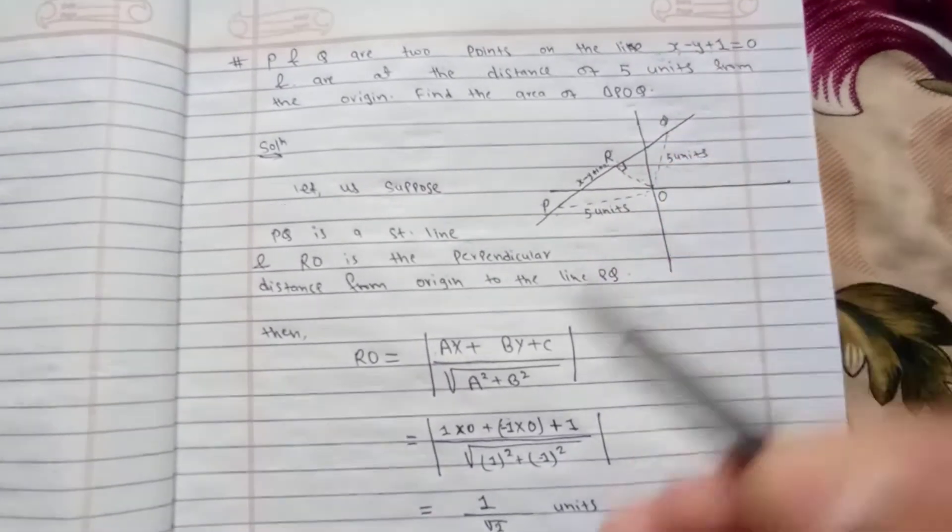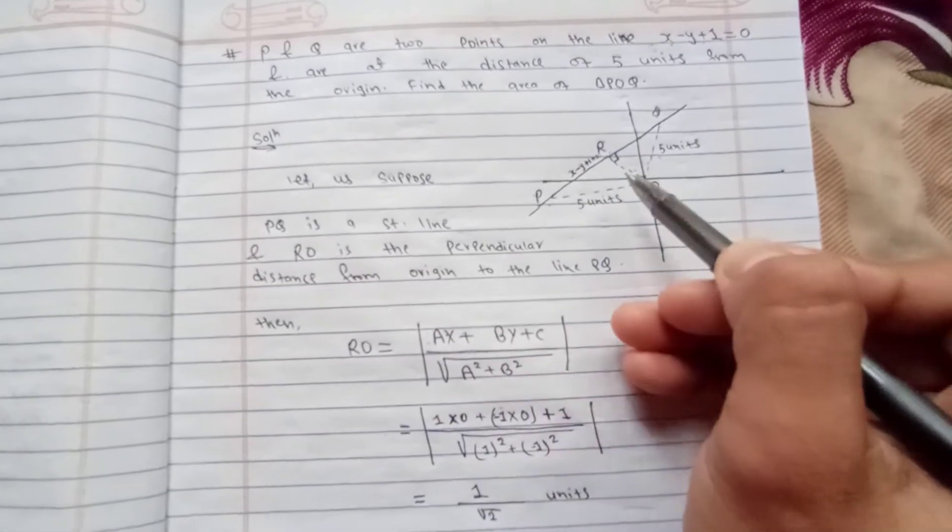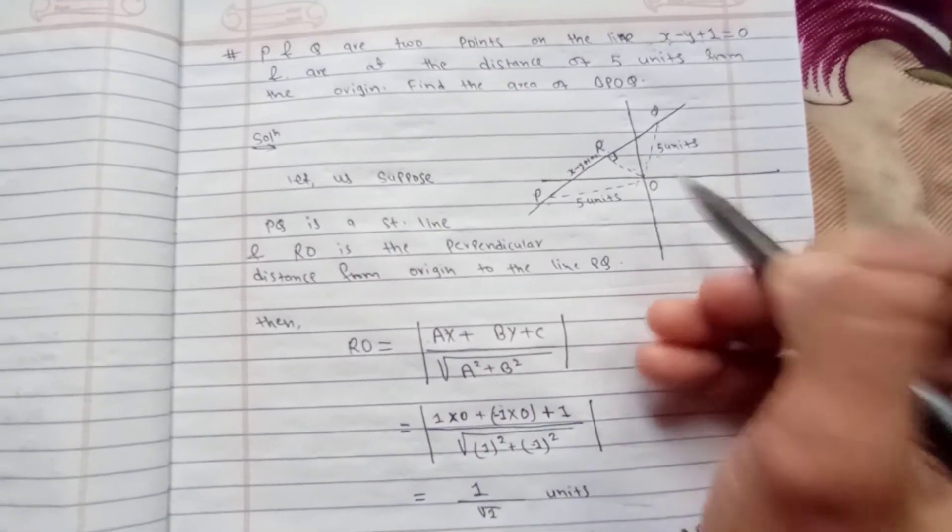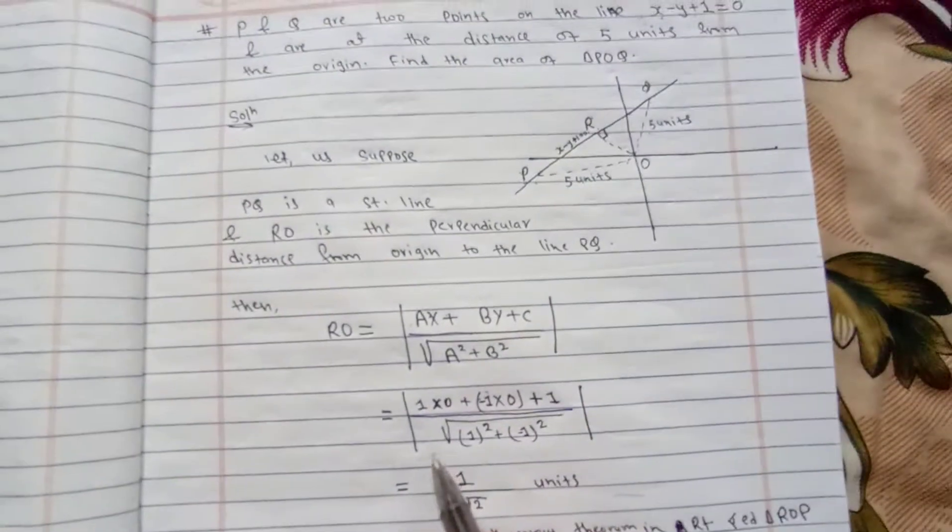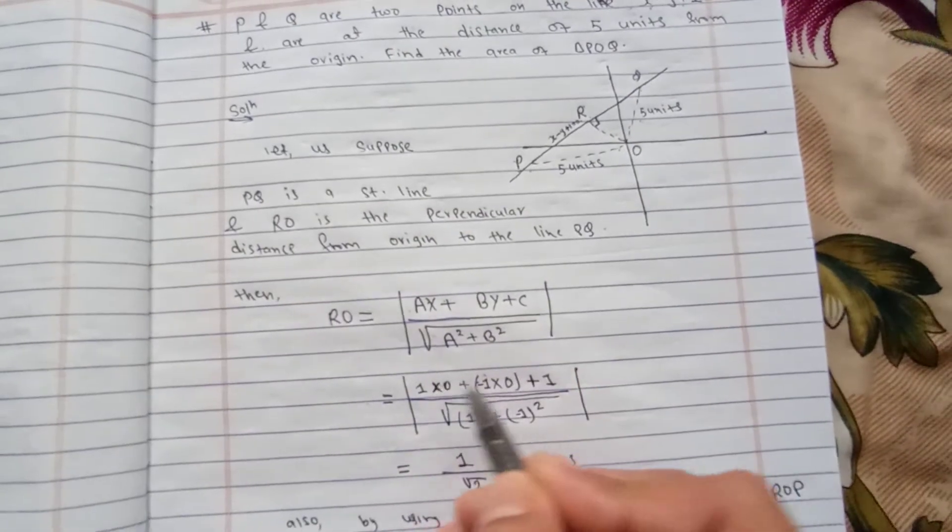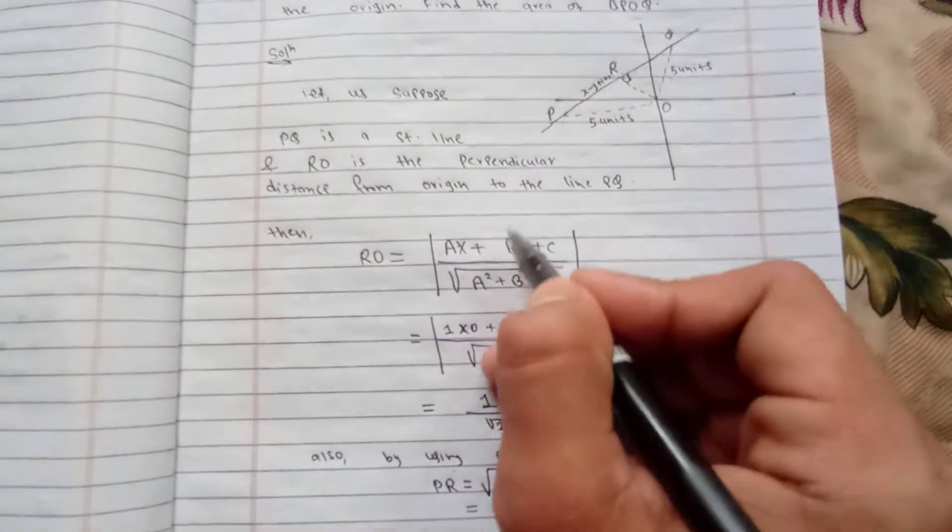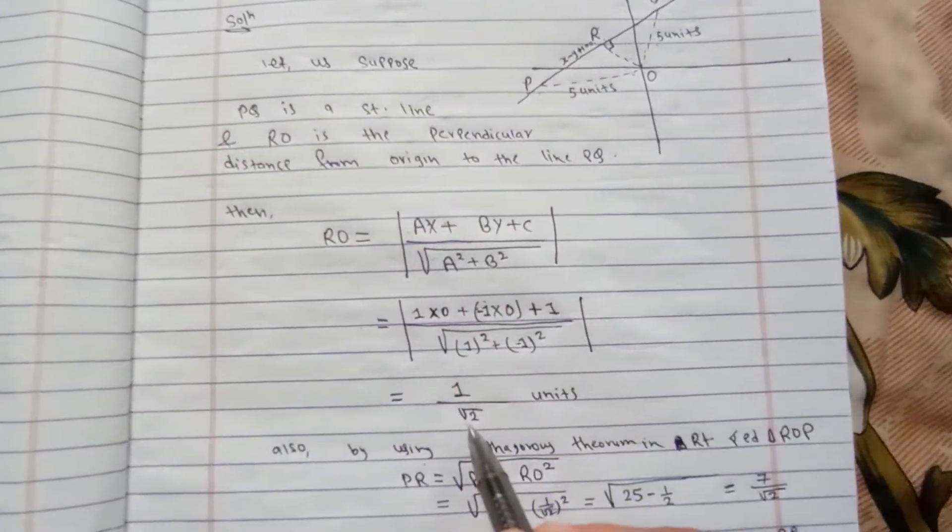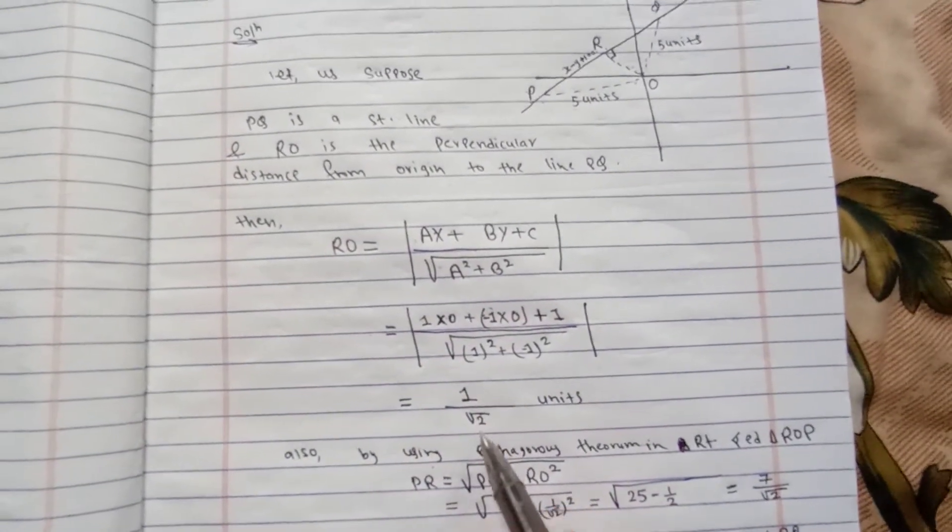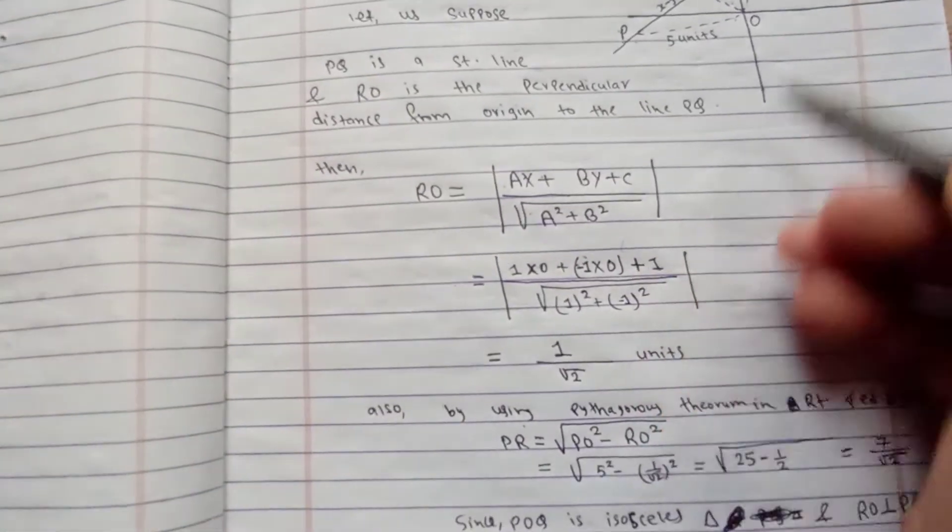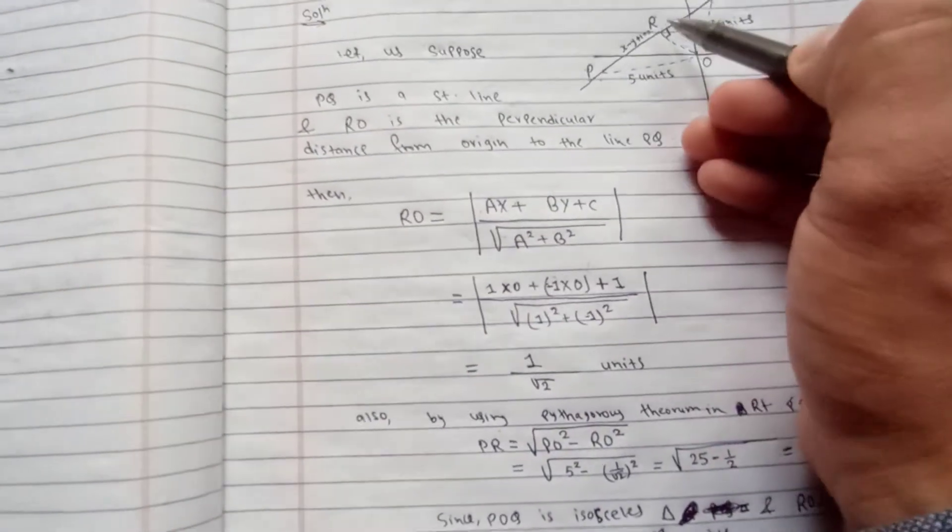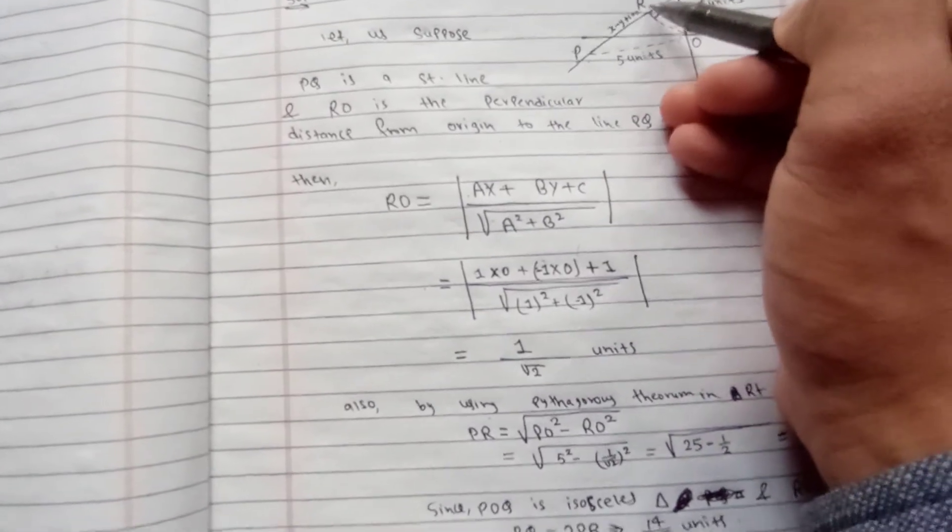For the origin point 0 comma 0, we put the values: x equals 0, y equals 0, a equals 1, b equals minus 1, and c equals 1. Solving this, we get 1 by root 2 units. This is the perpendicular distance from origin to the straight line PQ.